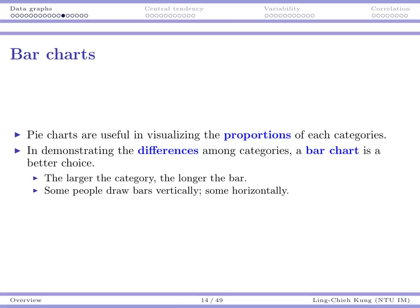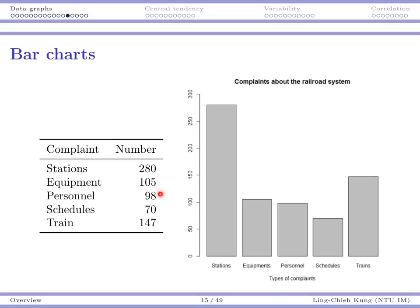For bars it's much easier. Looking at the same dataset drawn as five bars, for equipment and personnel the number of complaints doesn't have a huge difference, but on the bar chart we can immediately see that equipment is a more serious problem than personnel because its bar is taller. If you go back to the pie chart, it's very hard to tell from the slices which one is more serious. So a bar chart is used when you want to highlight the relative differences among categories.